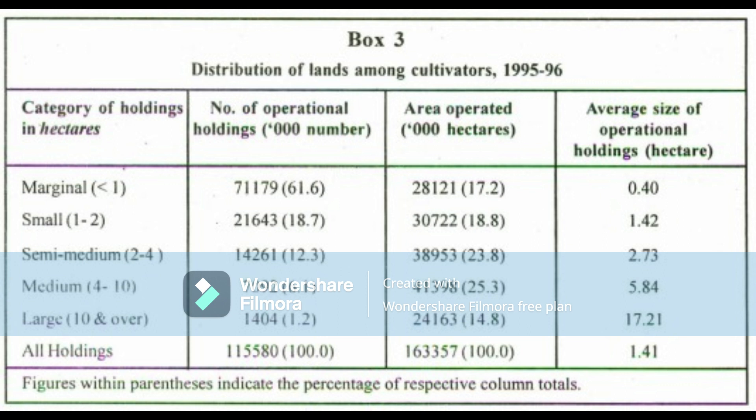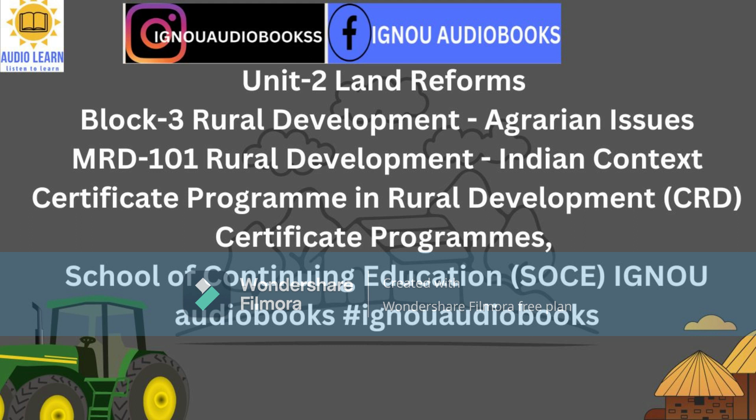Wherever ownership rights were not conferred on tenants, provisions of security of tenure were made. A vast disparity in the land distribution among cultivators continues. According to the 2001 census, there are 127.6 million cultivators and 107.5 million landless agricultural laborers. Studies have shown that where tenancy has been abolished, concealed tenancy is being carried out under the guise of personal cultivation. In the areas which have been the greatest beneficiaries of the green revolution strategy, reverse tenancy is on the rise, as small land holdings are not necessarily compatible with developed technology. Small owners are thus being reduced to the status of agricultural laborers in an increasing measure.